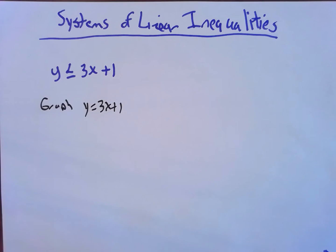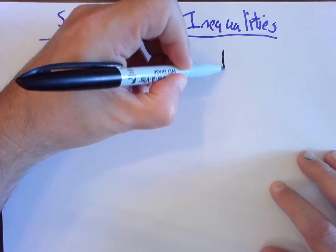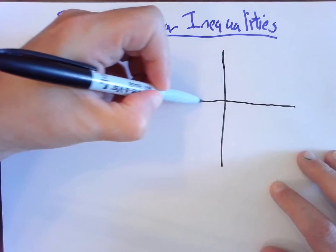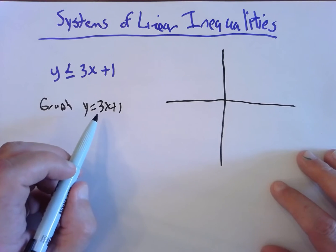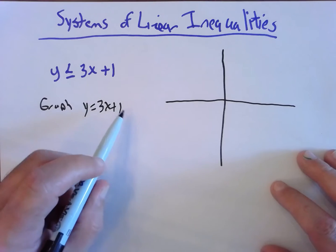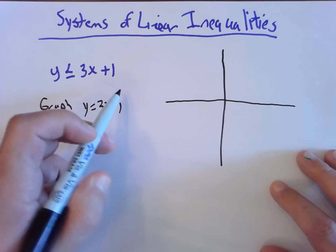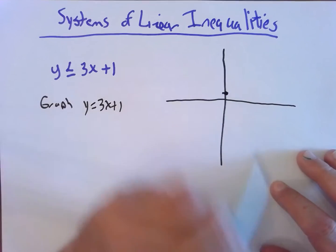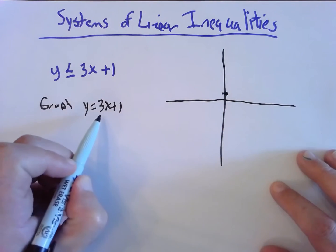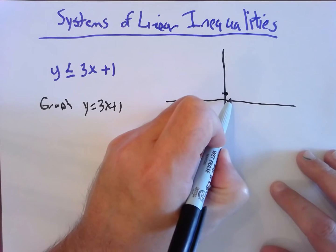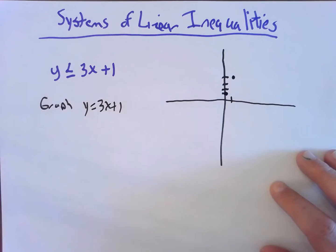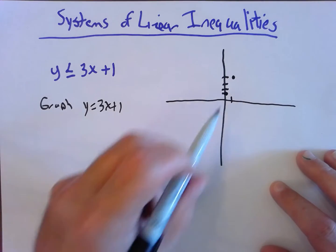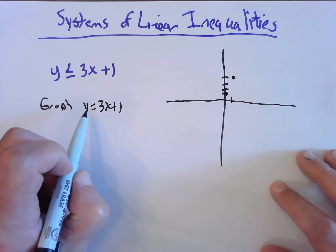You can graph using your favorite method — an xy chart, finding the intercepts, or using the slope and the y-intercept. I'll use the slope and the y-intercept. We have b equals 1, so the y-intercept is the point (0, 1). The slope is 3, so from that point, if I go over 1 and up 3, there's another point. Those two points live on this line.